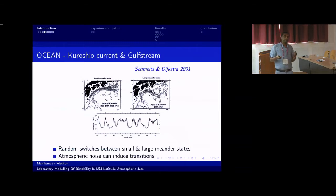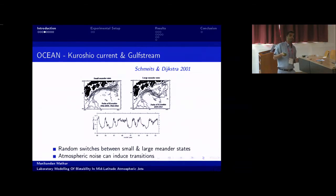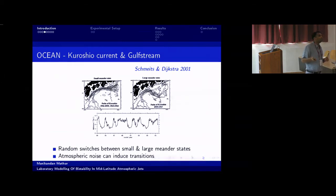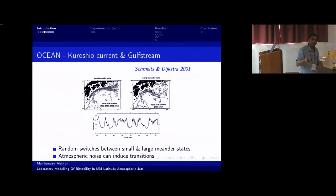Here's another geophysical example where abrupt changes happen: the Kuroshio current off the coast of Japan. During some periods, the mean path of this current is quite close to the Japanese coast, but during other times — based on a combination of numerical models and observations — the jet meanders or deflects significantly from the coast. A time series of the mean distance of the Kuroshio current from the coast shows abrupt changes: large values corresponding to strong meandering, and small values corresponding to the jet sticking close to shore. These switches are seemingly random, and that's what we would like to simulate in a lab experiment.